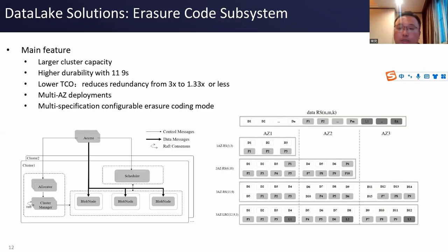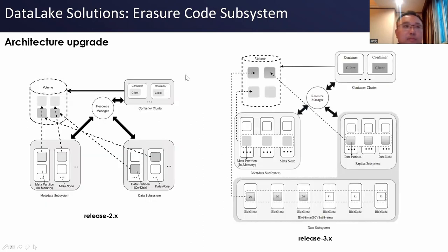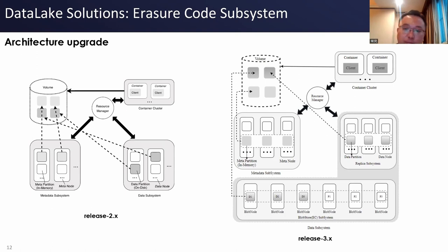Let's talk about the architecture. It includes four subsystems: client, cluster management, metadata subsystem, and data subsystem. We made improvements mainly in the data subsystem when updating from version 2 to version 3. For example, we added erasure code volumes. KubeFS now contains lower-cost erasure code volumes, and it is compatible with former versions, allowing smooth updates to version 3.